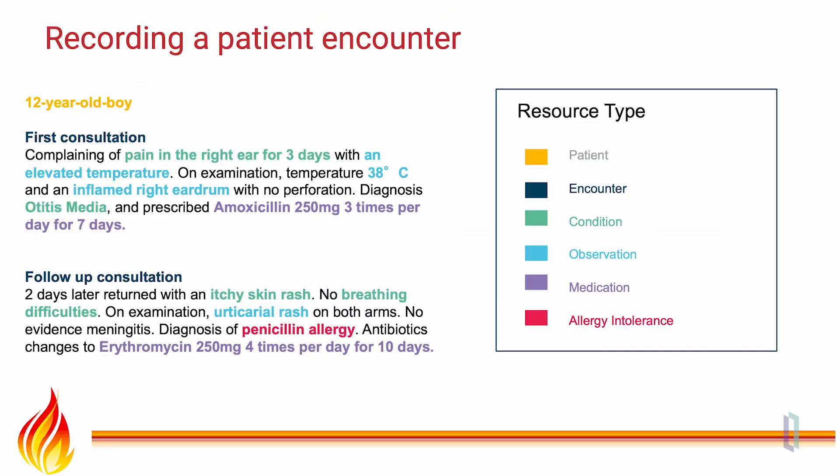As an example of a FHIR document, consider this brief representation of two office encounters — one when a 12-year-old child presents to a physician with pain in the right ear for three days and an elevated temperature. The pain in the right ear is a condition being asserted by the patient, and the elevated temperature is an observation made by the patient in the clinic. The patient is found to have an elevated temperature of 38 degrees, which is an observation asserted by the practitioner.